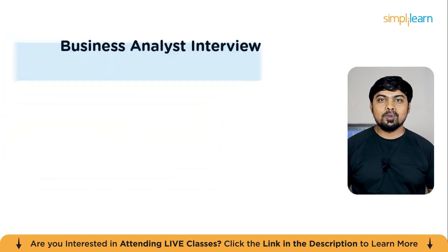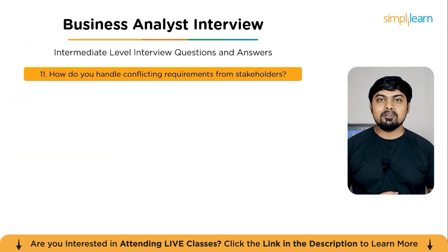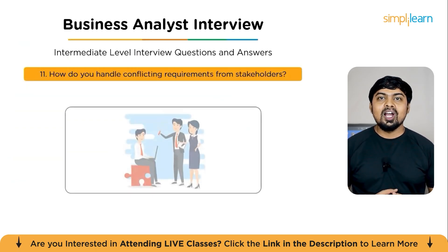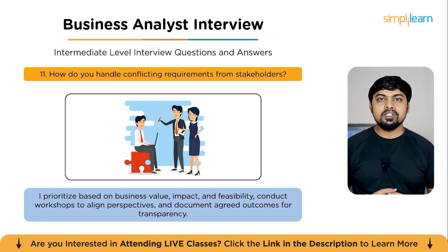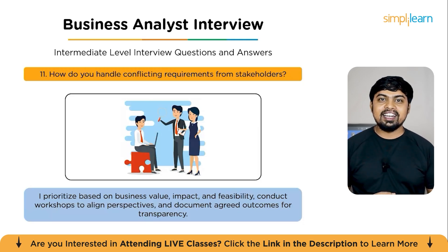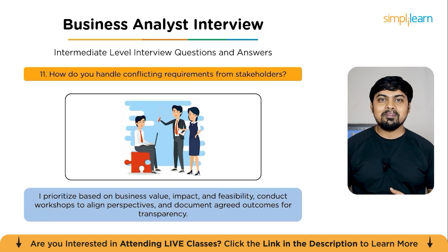Question 11: How do you handle conflicting requirements from stakeholders? Conflicts arise when different stakeholders have competing priorities. I address this by: understanding the root cause of each viewpoint through interviews; facilitating joint workshops to discuss trade-offs and align expectations; prioritizing based on business value, feasibility, and risk; and documenting agreements to maintain transparency. This structured approach ensures alignment while maintaining trust among stakeholders.